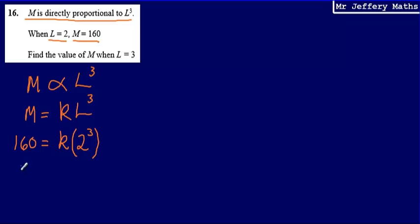What I can then rewrite this as, I can now say that 160 is equal to K multiplied by 8. Or K multiplied by 8, I can write as 8K. Now in order to find out what this value of K is going to be, all I have to do is solve this equation.